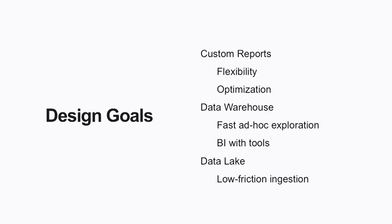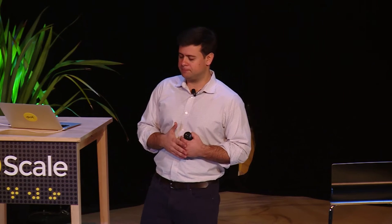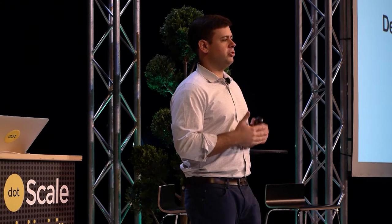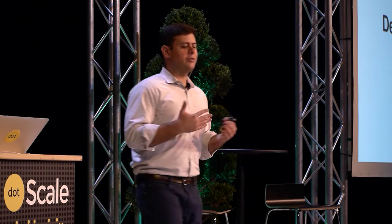So let's think about what we want — let's put some goals on paper. Here are the best features from each system: custom reports are great because you have flexibility; if you give developers tools they can pretty much solve any problem and do all sorts of optimization. Data warehouses are great because you can have really fast ad hoc exploration using tools like Tableau or Qlik. And data lakes are great because you get low-friction ingestion — you put data in quickly, and as the schema changes you keep putting data in.